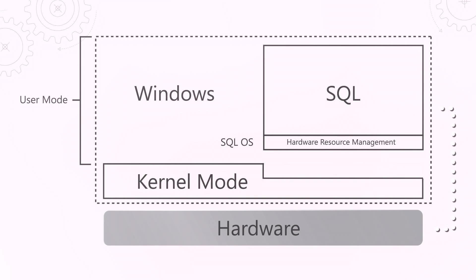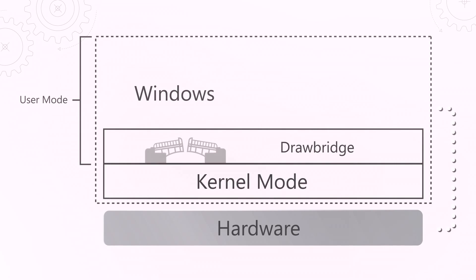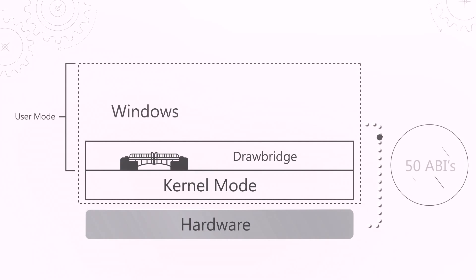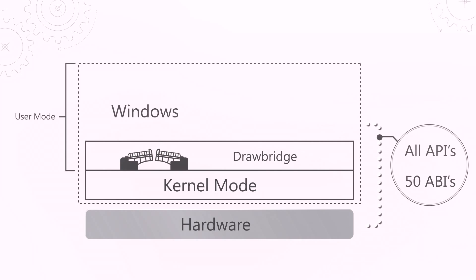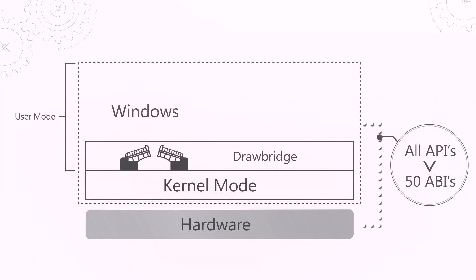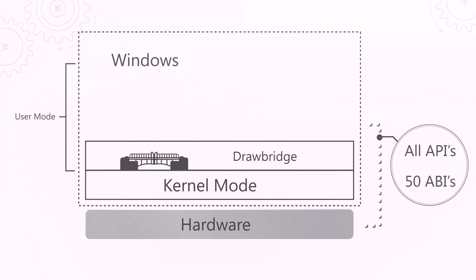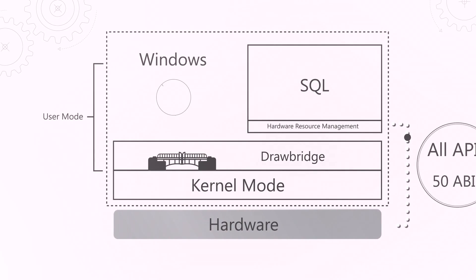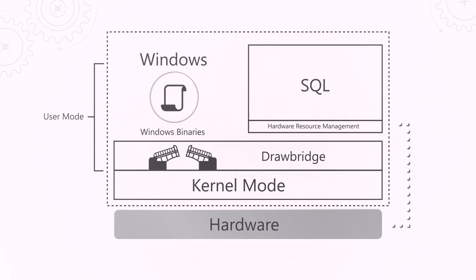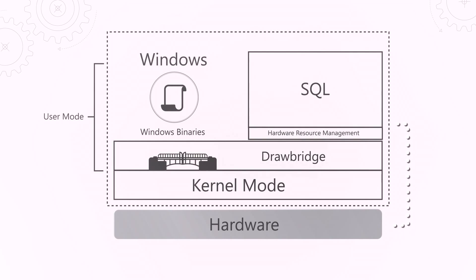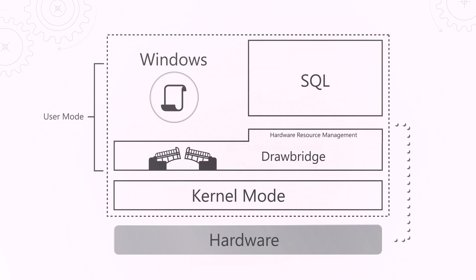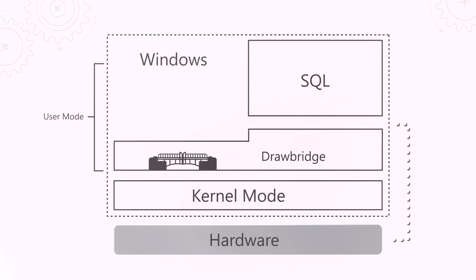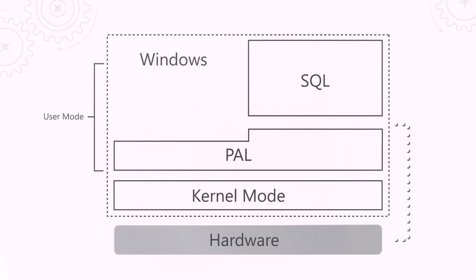A few years ago, a new project started in Microsoft Research called Drawbridge. Drawbridge was intended to isolate an application, and one of the things that came out of it was they were able to map all of the Win32 API surface area down to about 50 application binary interfaces. We combined that project with a few small Windows binaries and the SQL OS into one thing we now call the SQL Platform Abstraction Layer.